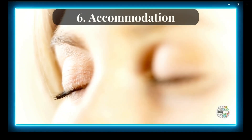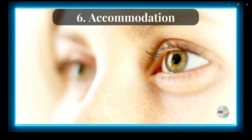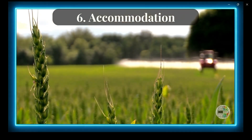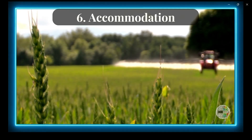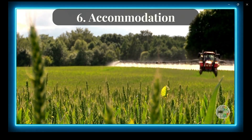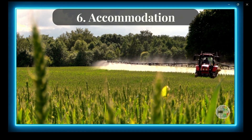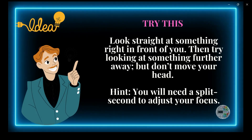Number 6: Accommodation. This cue involves your eyes adjusting to focus on things at different distances. In this video, we start by focusing on a plant in front, but to look at something further back — like a tractor — we have to adjust our eyes to the distance. Try it yourself: look straight at something in front of you, then shift your gaze to something further away without moving your head. You'll notice you need a split second to adjust to the new distance.